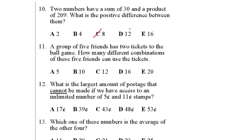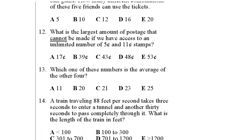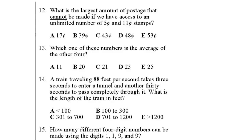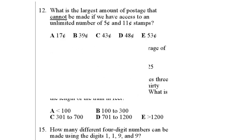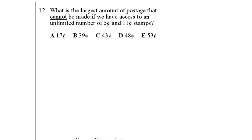Now also in practice problems 2, let's do question number 12. What is the largest amount of postage that cannot be made if we have access to an unlimited number of 5 cent and 11 cent stamps? So we have 5's and 11's only. What is the largest amount of postage that cannot be made? Look at the question really closely. It says the largest amount that cannot be made. So I'm looking for an amount that cannot be made and I want it to be the biggest one possible.